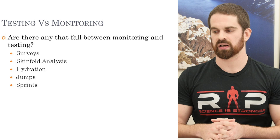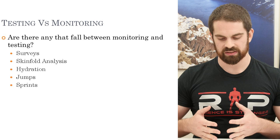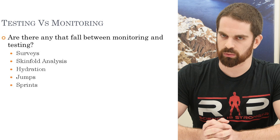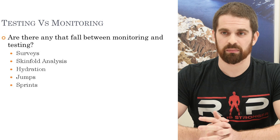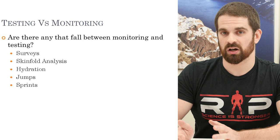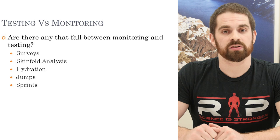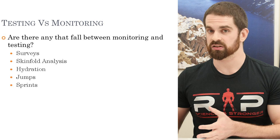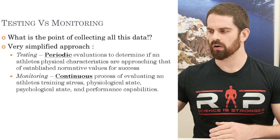Jumps and sprints are probably some of the best indices of general athlete performance — just how athletic they are in general. We can look at them on really finite or really gross scales. Something as simple as a Vertec or a 10-meter sprint with a stopwatch is still very useful, but we could also look at jumps on a force plate or sprints using infrared timing devices that can measure ground contacts, foot speed, and all sorts of data. There are different ways to assess those exact same tests depending on how deeply you want to delve into them.